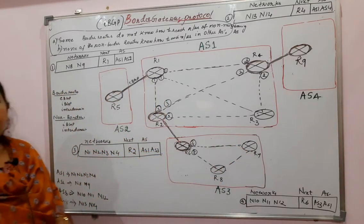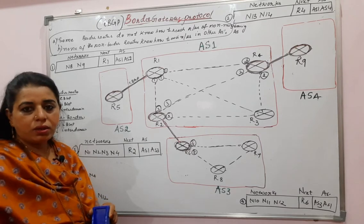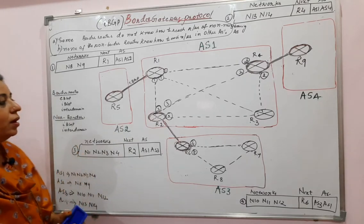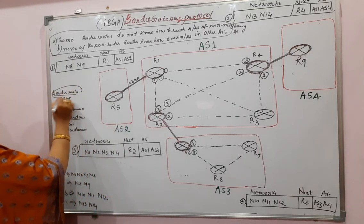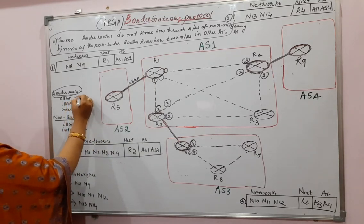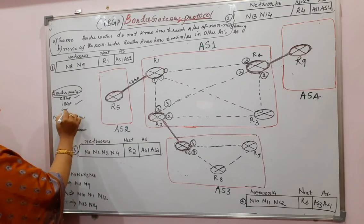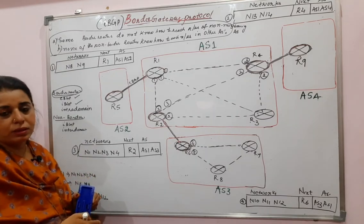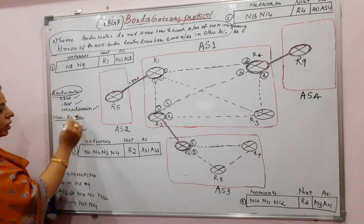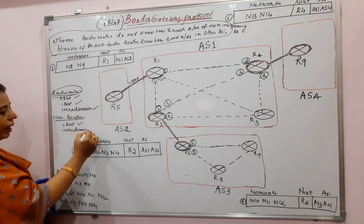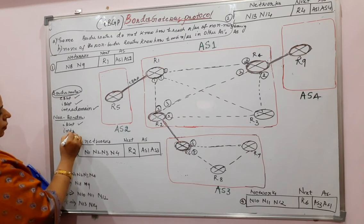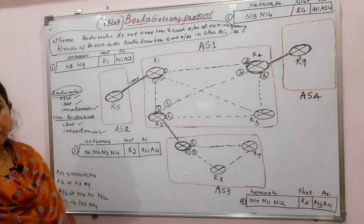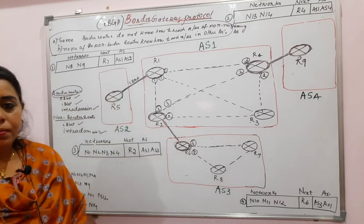So internal BGP sessions are established within each autonomous system to convey to their routers that you can also reach the networks present in other autonomous systems. To make this happen, all border routers must have EBGP, IBGP, and an intra-domain protocol installed. Intra-domain is needed to reach networks within the autonomous system itself — it can be RIP or OSPF, which are the popular intra-domain protocols. For non-border routers, only IBGP and an intra-domain protocol are needed.